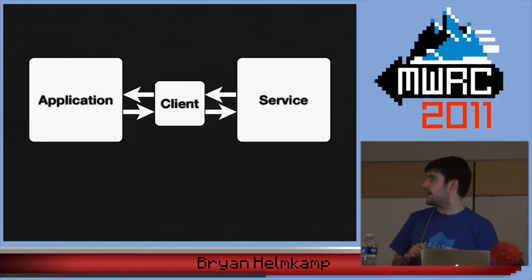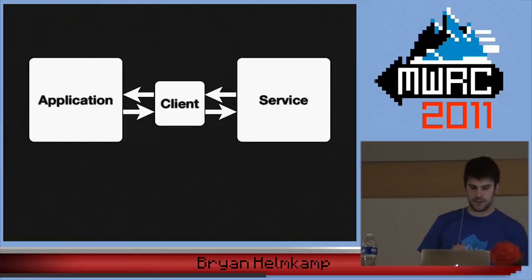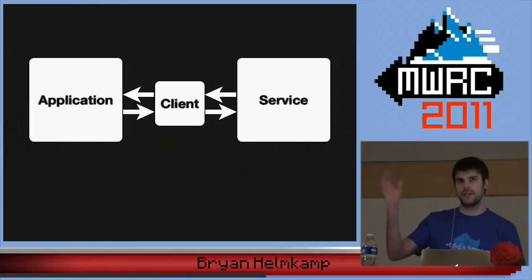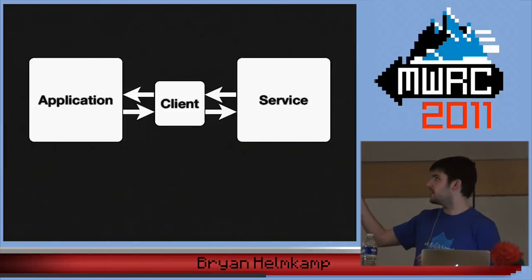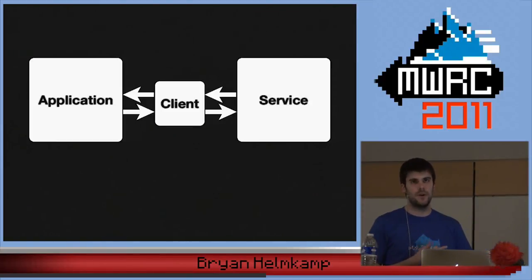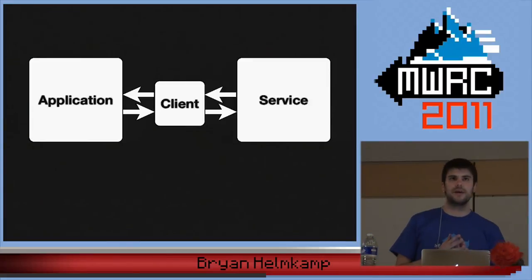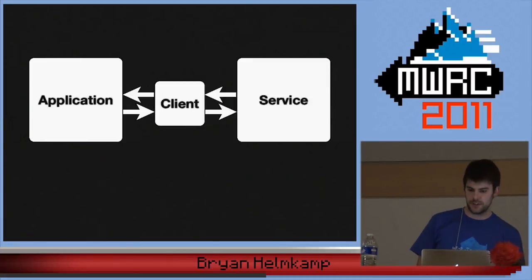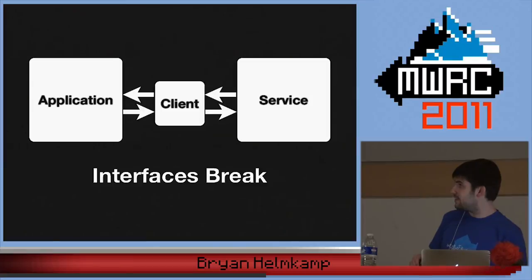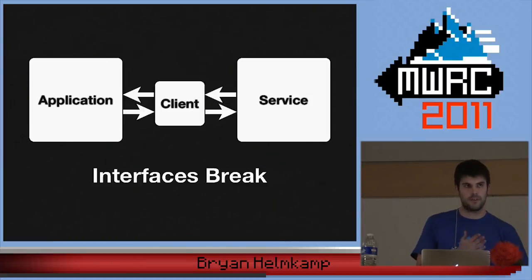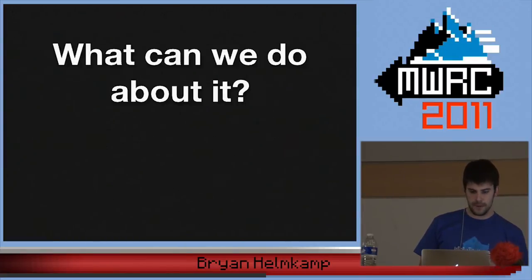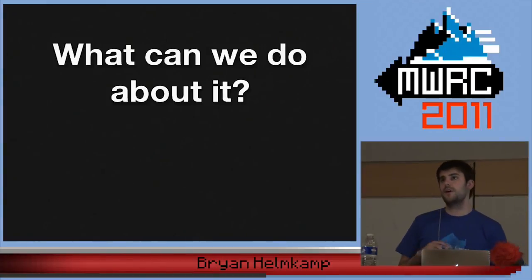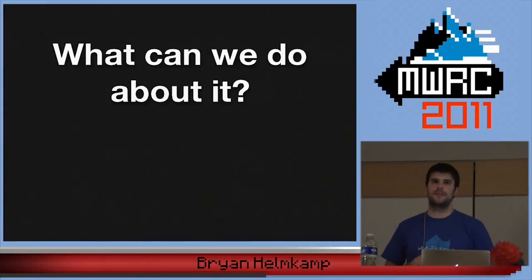A simplified diagram: you have an application, a client — maybe just some classes, or Active Resource — that knows how to make HTTP calls to your service. The interface is great, but something associated with those arrows in the middle stopped working. We thought a lot about what we could do about this.